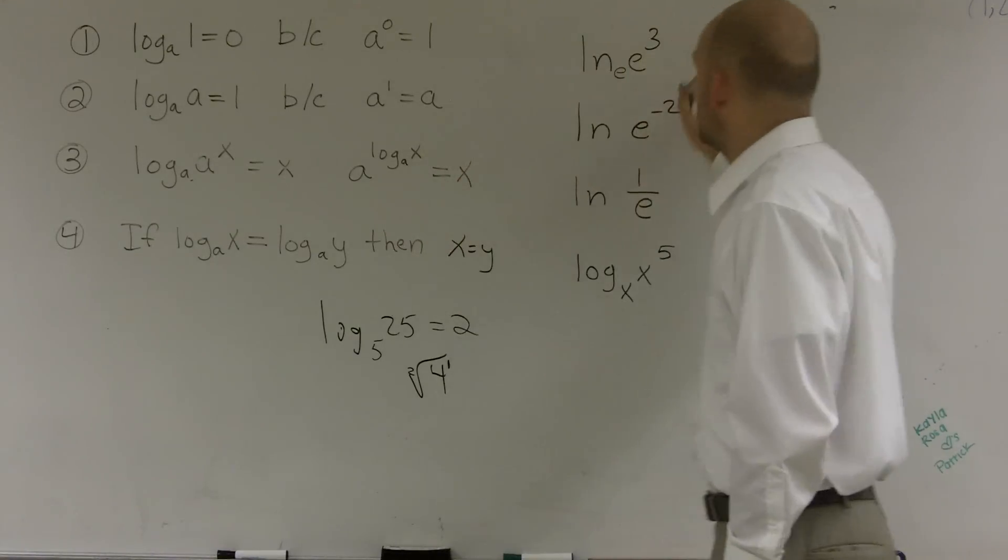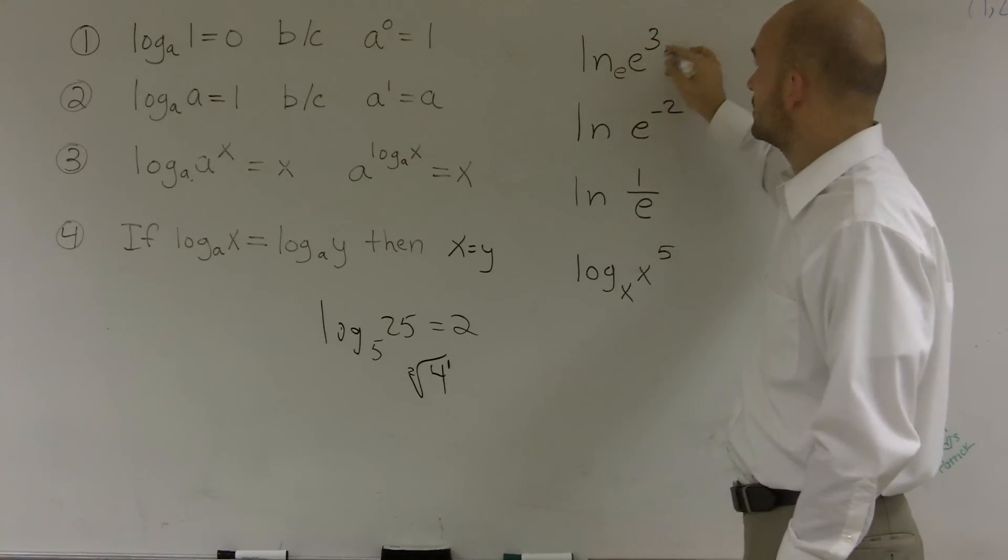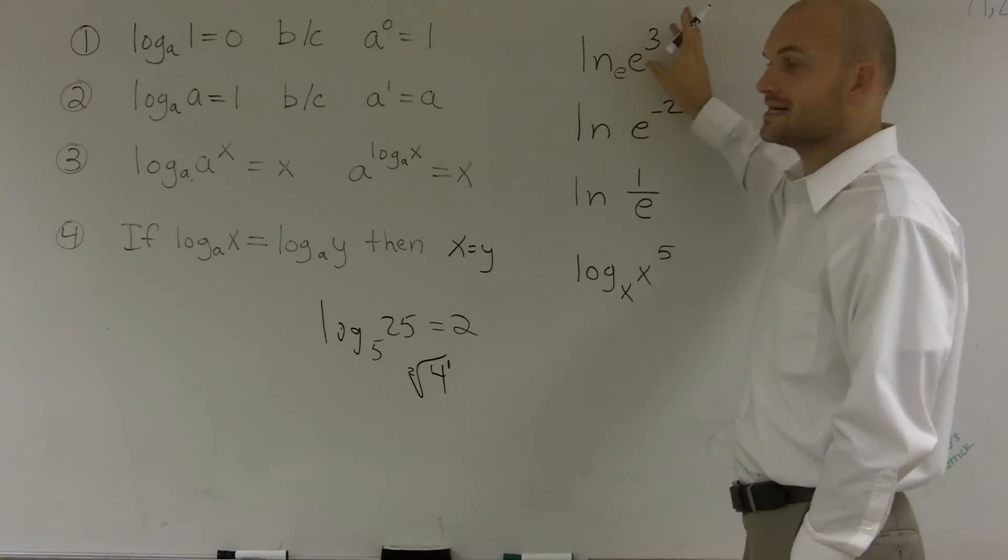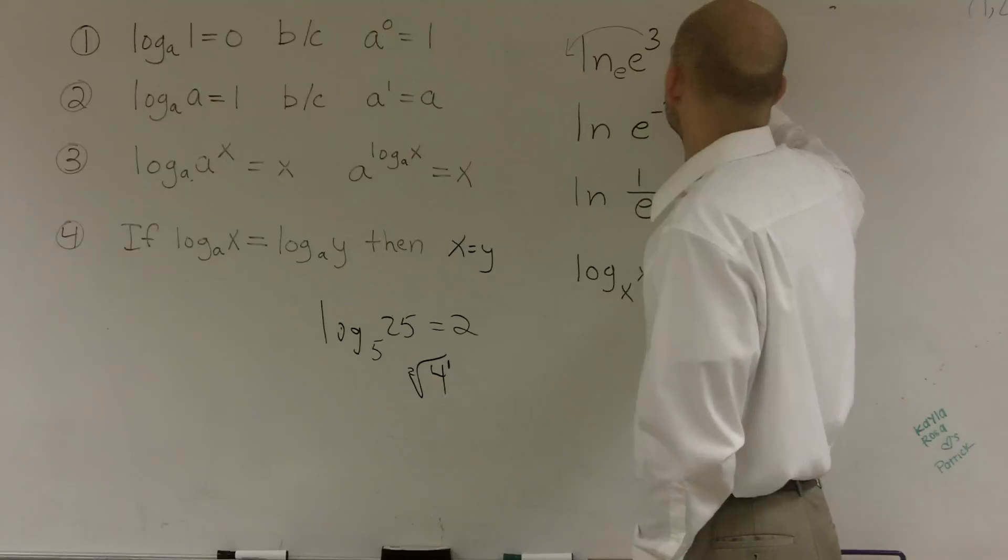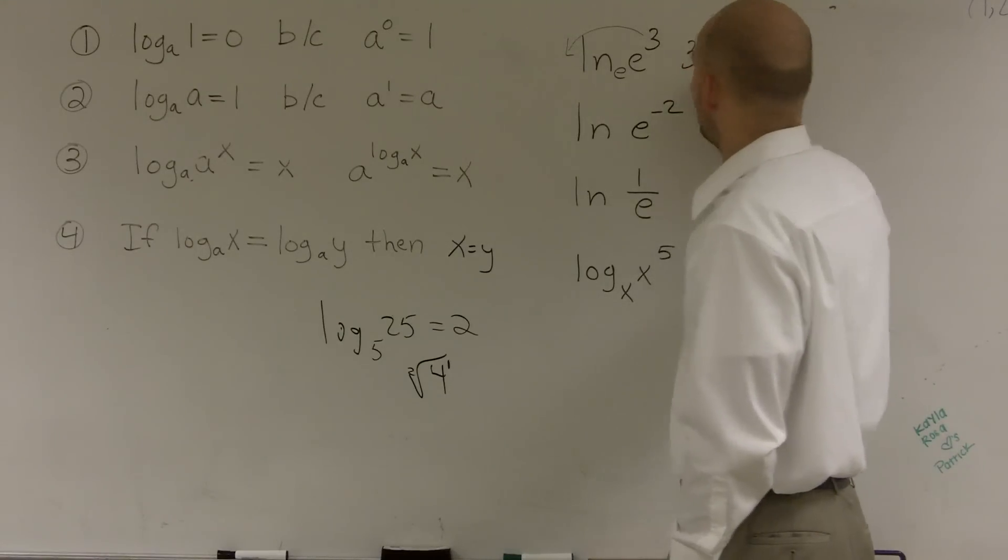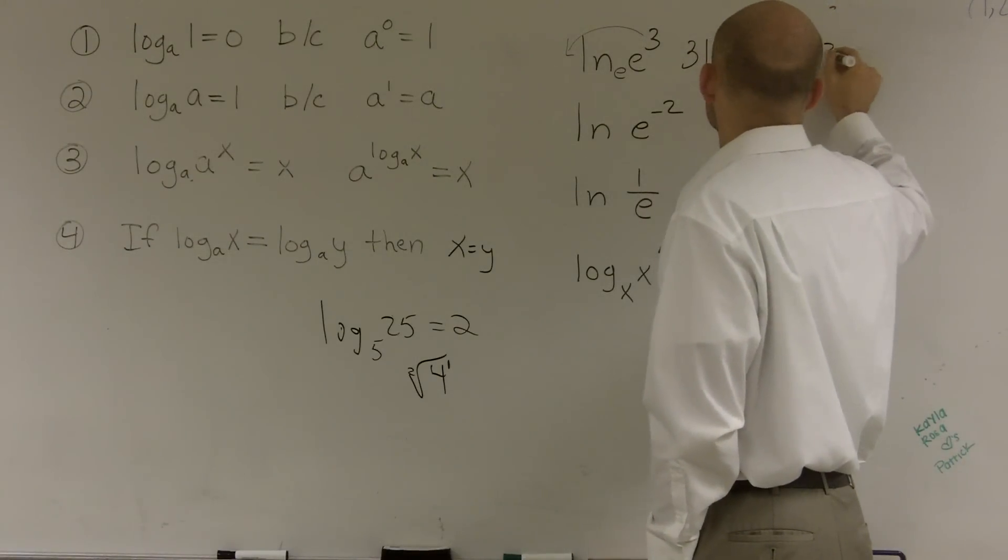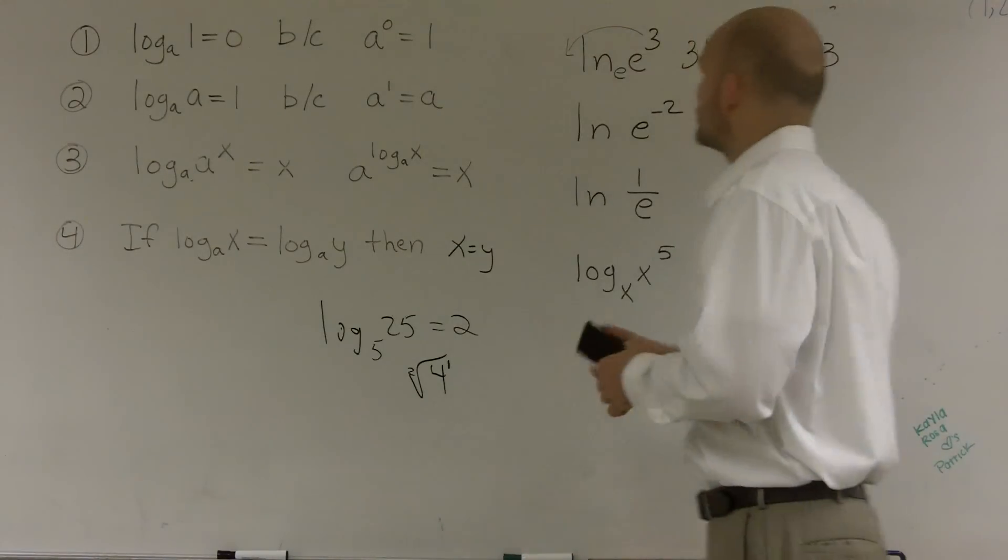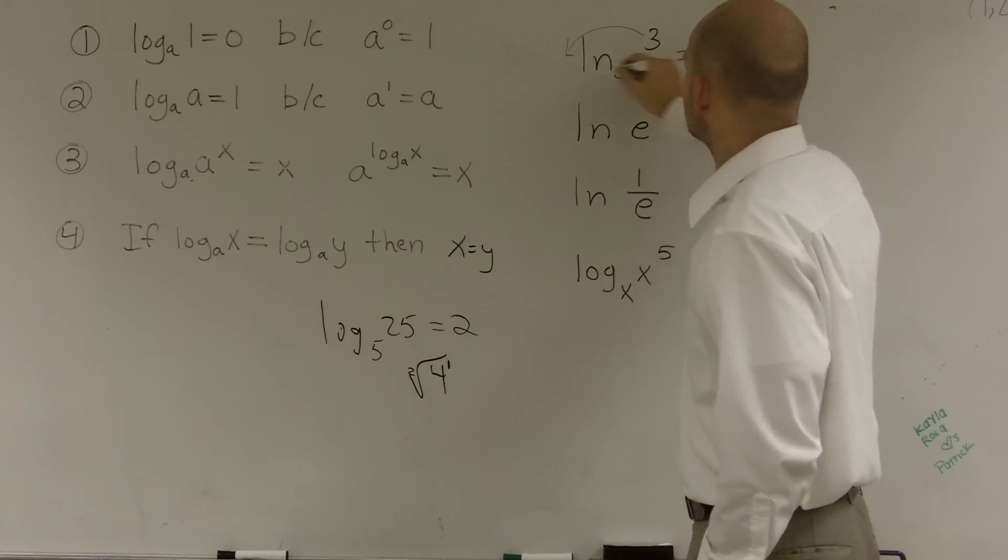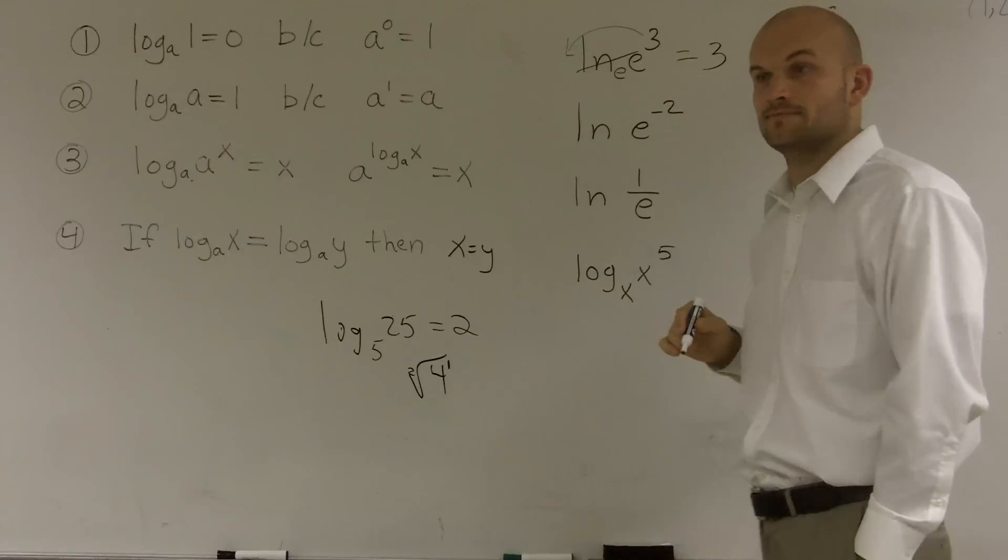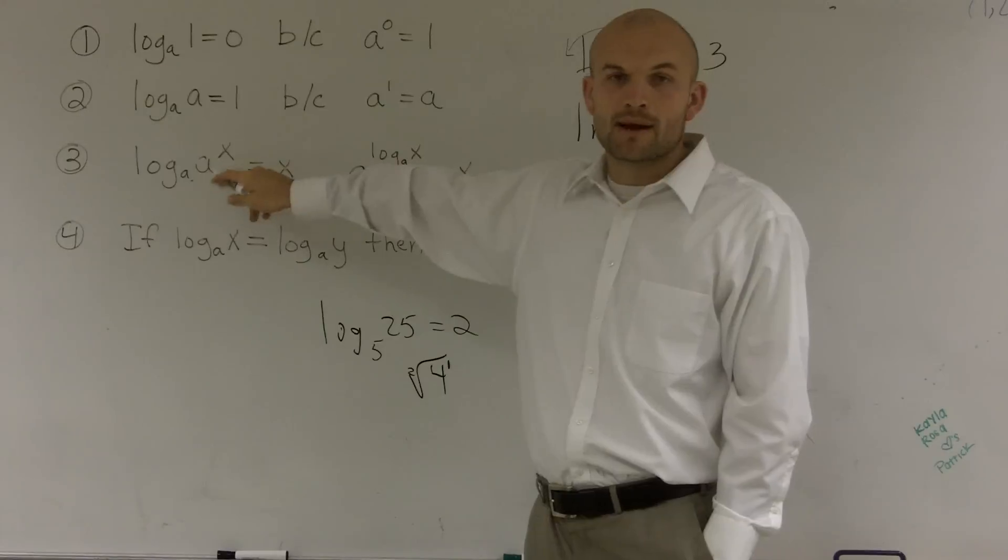When we have an exponent inside our logarithm, we can put that in front. So I could rewrite this as 3 ln of e. I know that ln of e equals 1. So really, this is 3 times 1, which equals 3. The answer to ln of e cubed equals 3, as this cancels out to 1. That's easily depicted in property number 3.